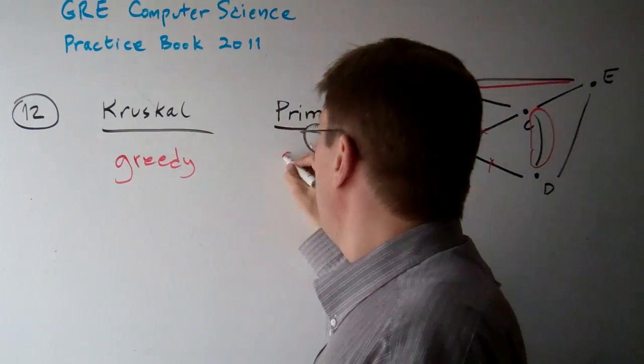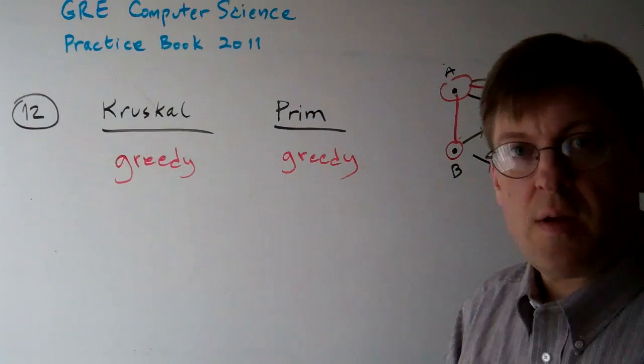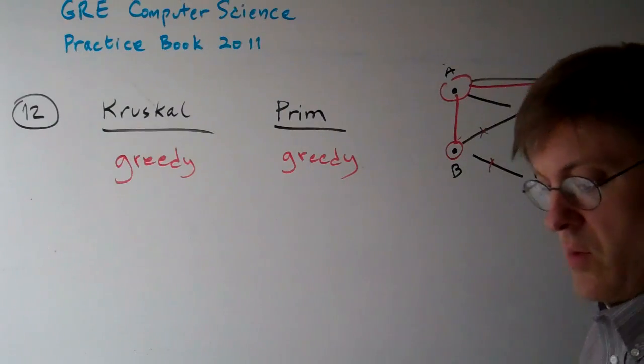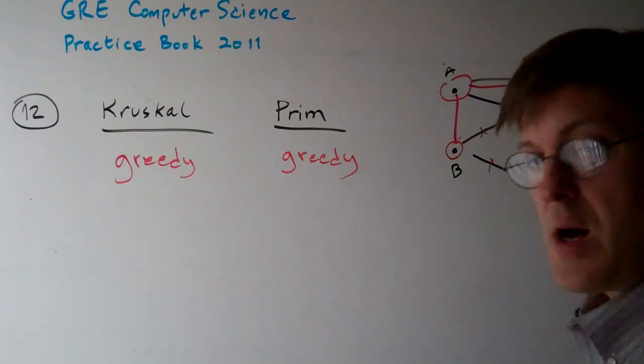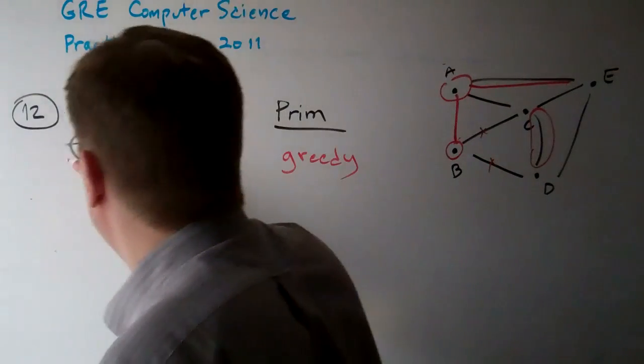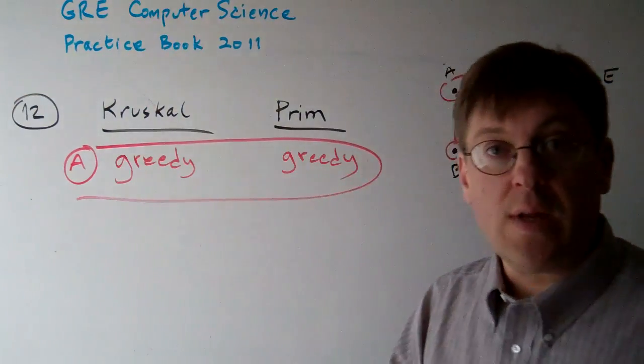Greedy meaning that it just takes the least weighted item from the choices left over. So in each step it takes the least cost solution. The answer then is A. Greedy, greedy.